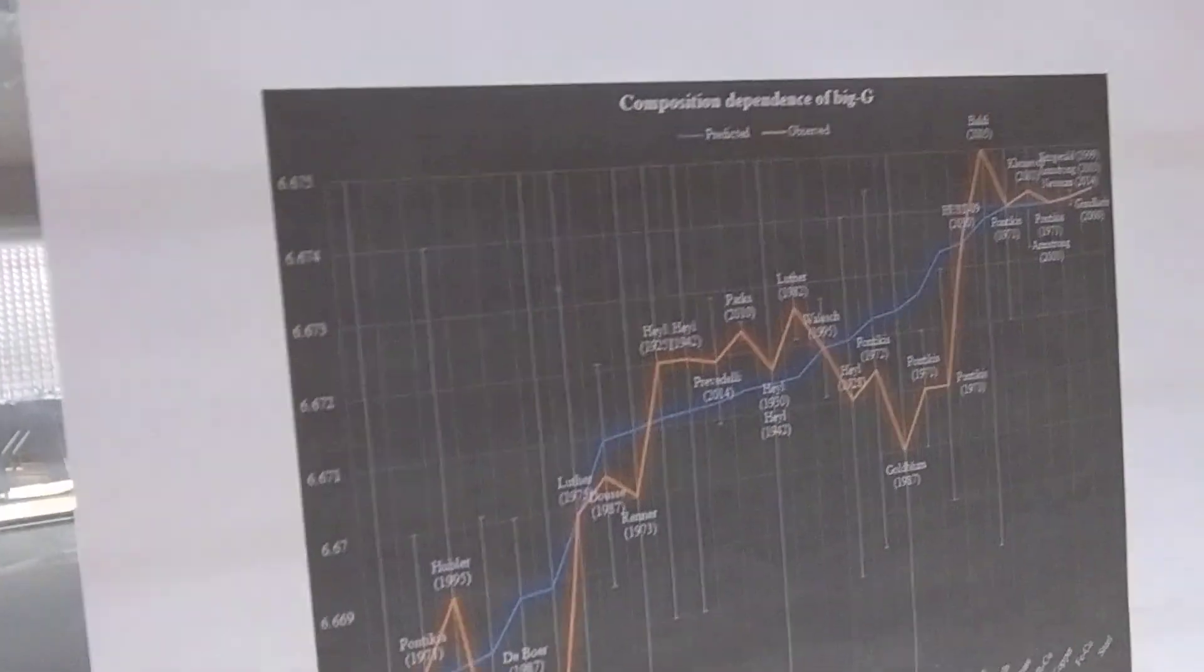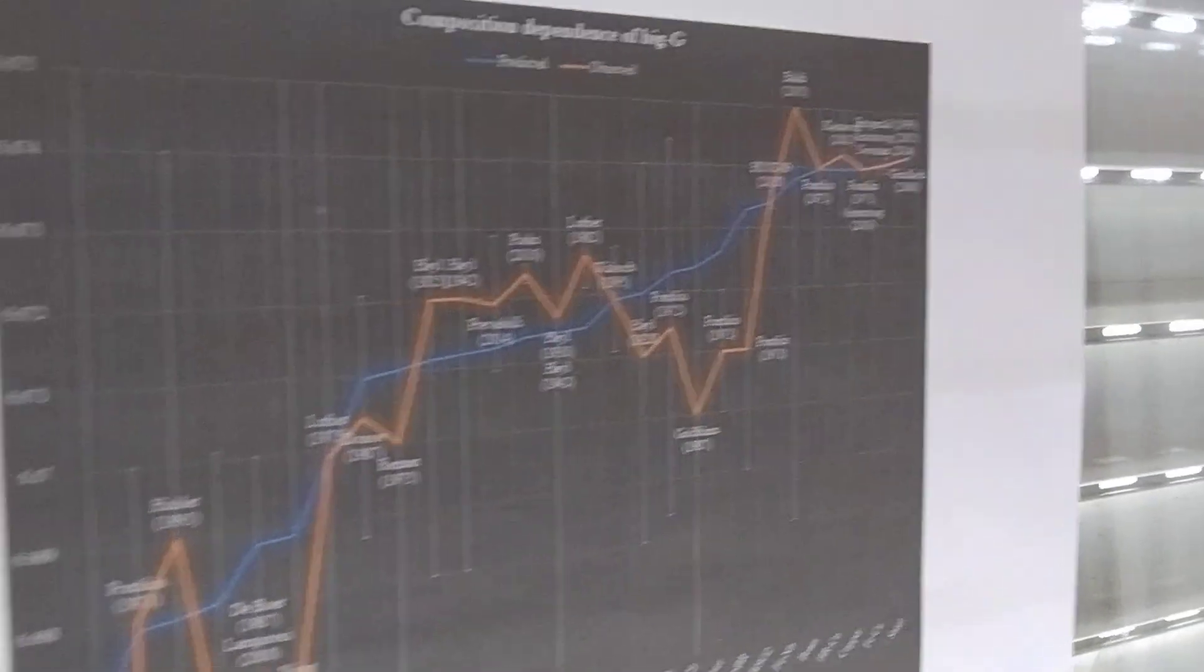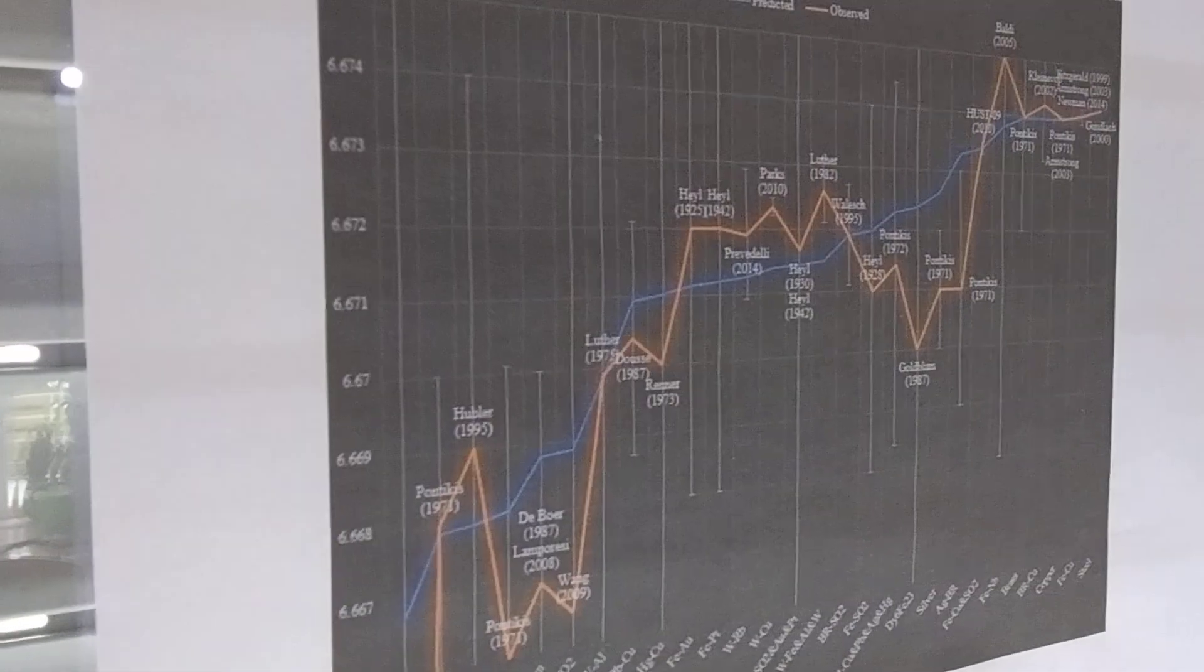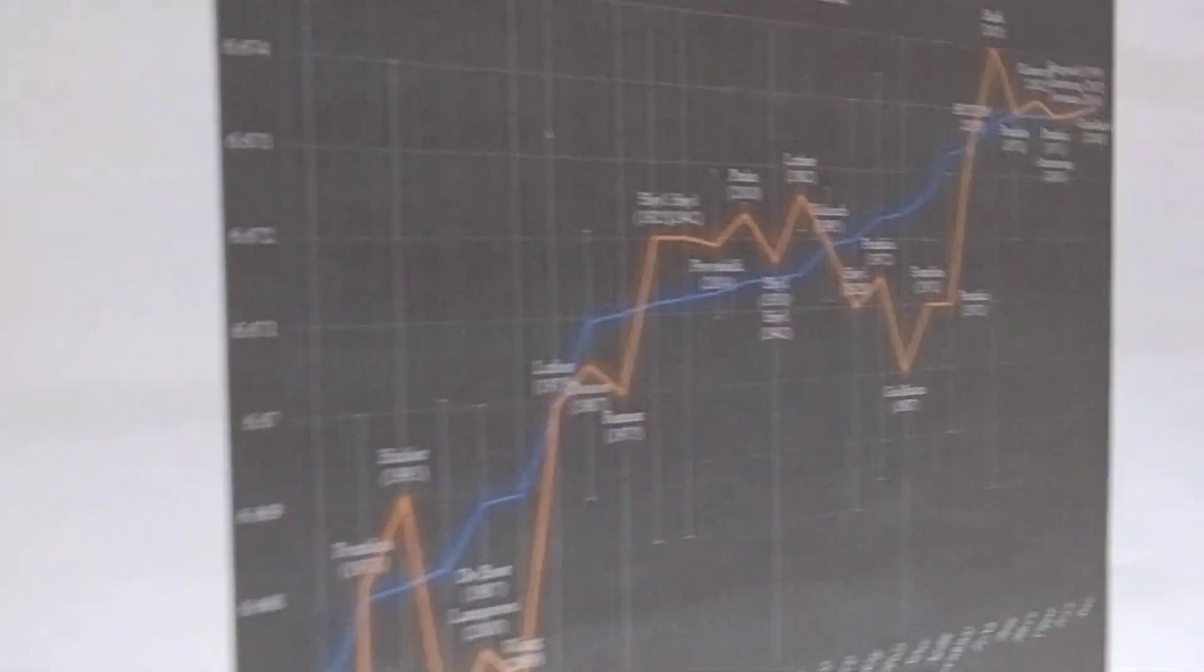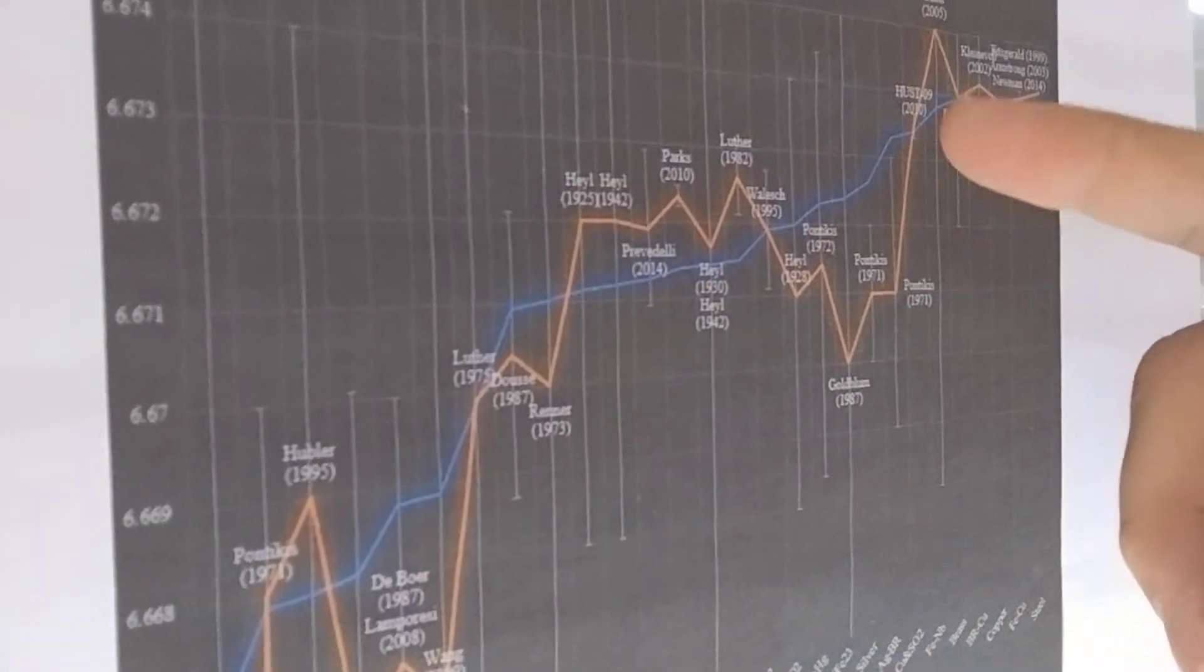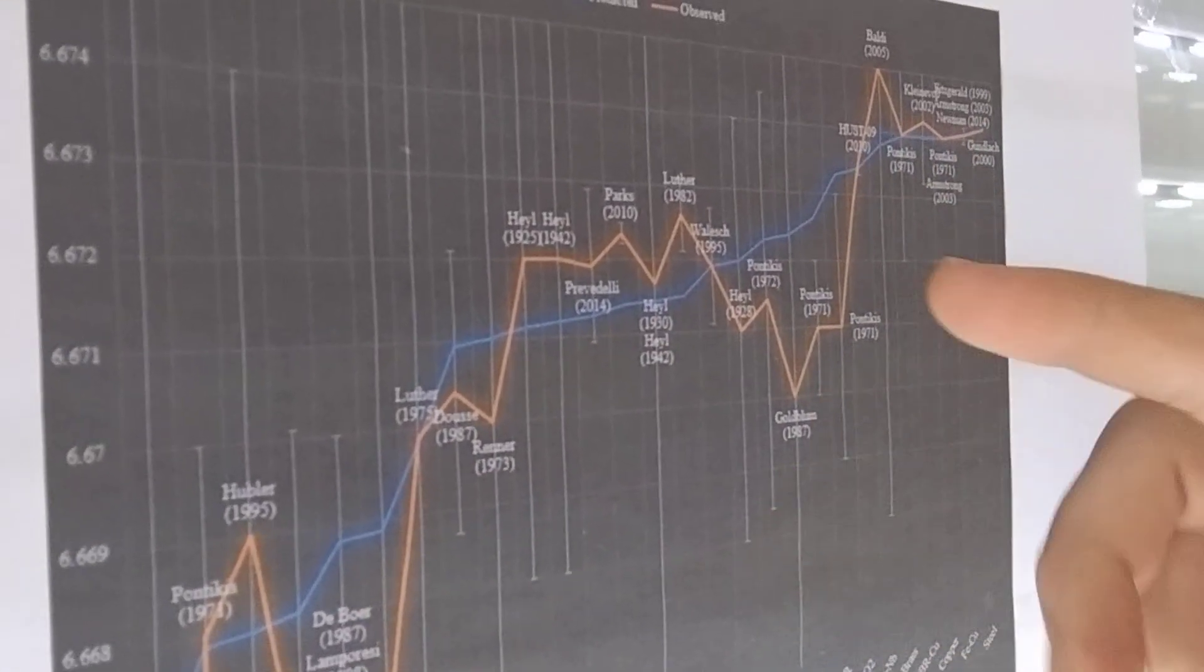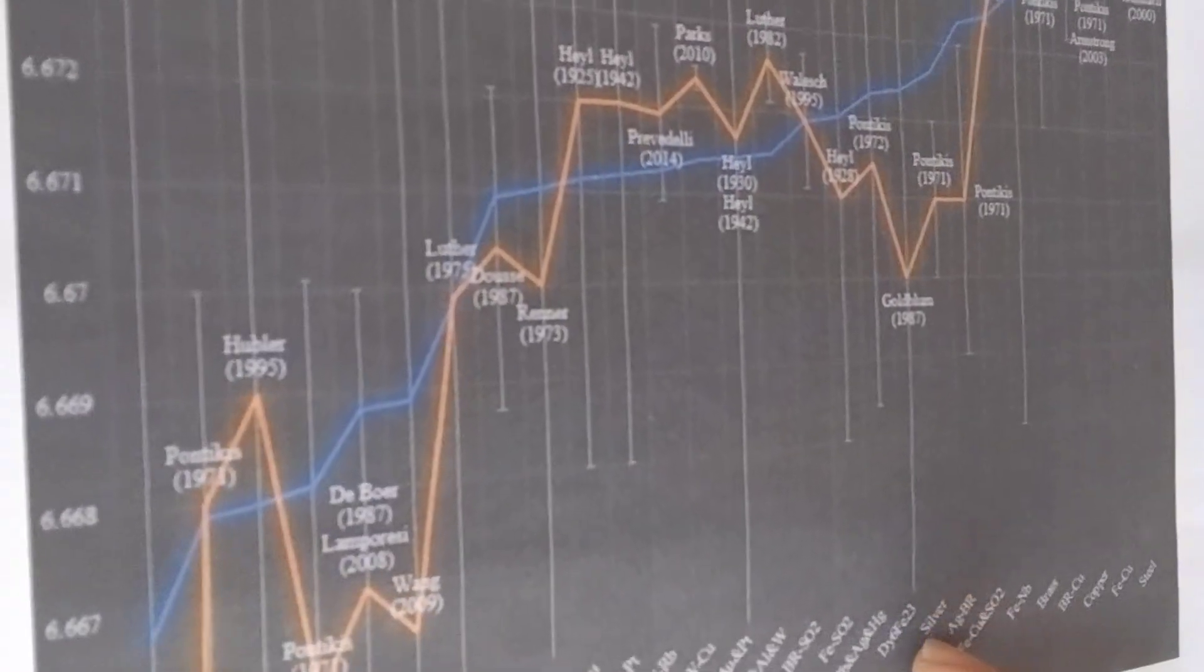But first off, we should look again at this graph of measured g-values. It shows that gravity depends on the baryon number. So when you look at the gravity per kilogram, you will get different values depending on how much negative binding energy there is in the element in question.